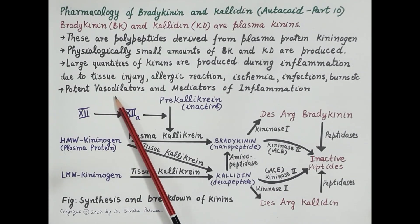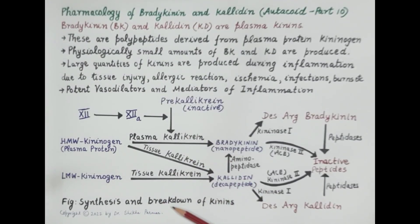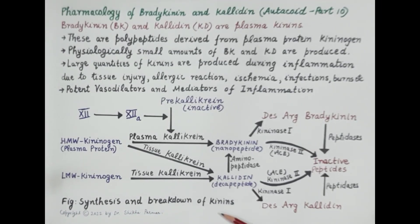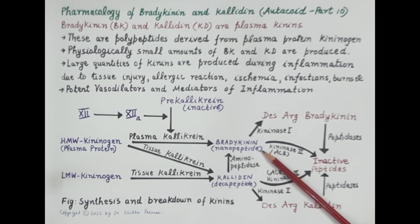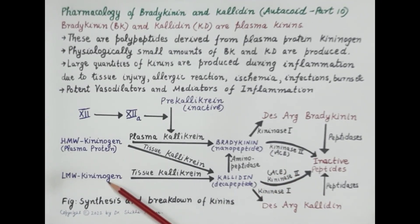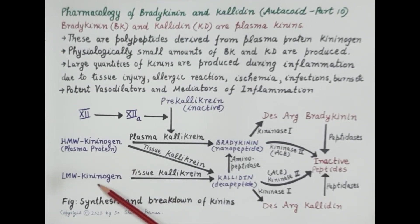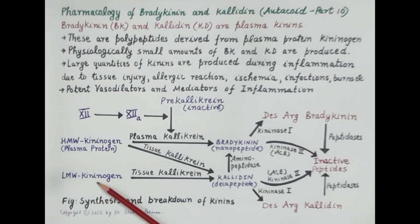These kinins are very important vasodilators and mediators of inflammation. This figure explains the synthesis and breakdown of kinins. Bradykinin is a nonapeptide — it is made up of nine amino acids. These kinins are produced from kininogen, a protein found in the plasma. The blood contains both high molecular weight and low molecular weight kininogens, and from these kininogens the kinins are produced.